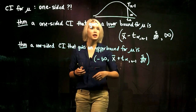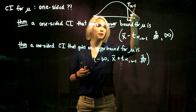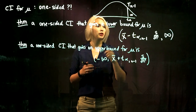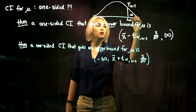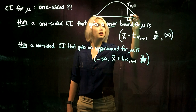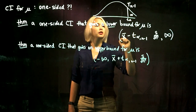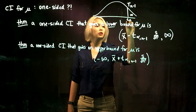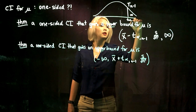To get our notation down: here's our t-distribution with n minus 1 degrees of freedom. We'll be looking for just alpha in one tail, so we're looking for the quantile t_alpha with n minus 1 degrees of freedom, such that we have alpha in that tail.